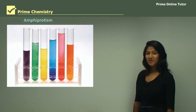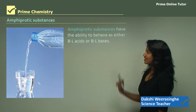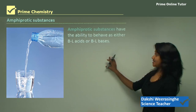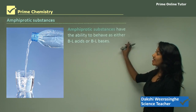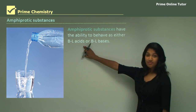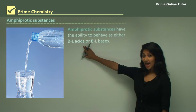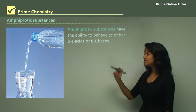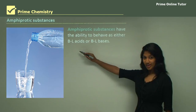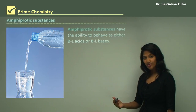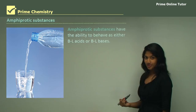Hello everyone. Today we'll be learning about amphiprotism. Amphiprotic substances have the ability to either act as Brønsted-Lowry acids or Brønsted-Lowry bases. In other words, BL stands for Brønsted-Lowry, and that means they can either donate protons or accept protons.